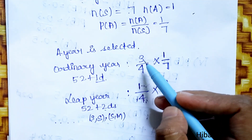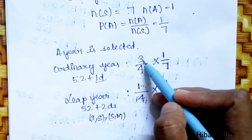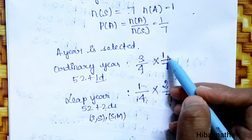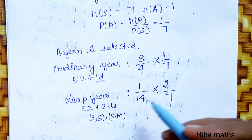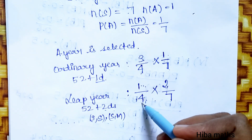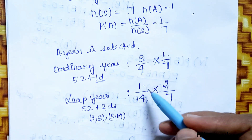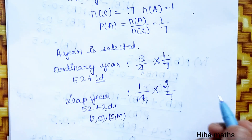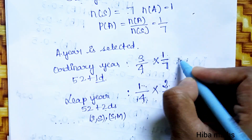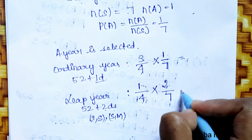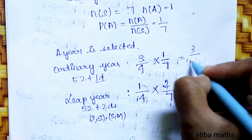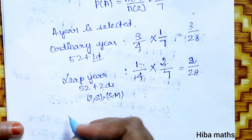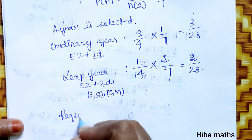An ordinary year is 3 out of 4 years. With 1/4 chance for Sunday in 1 year, the 2 Sundays possible values give 3 by 28 and 2 by 28.